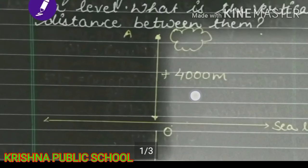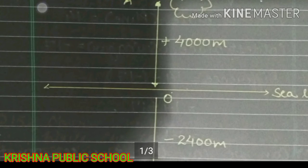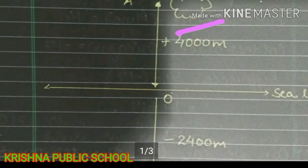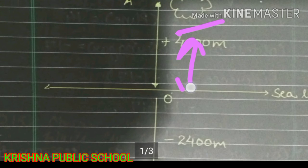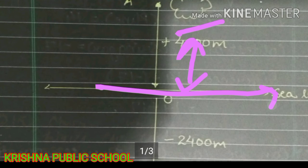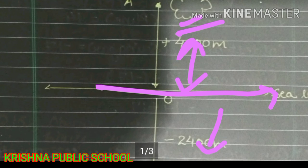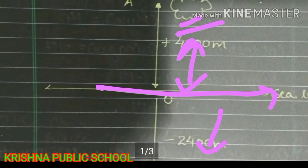We understand with the help of a diagram. My cloud is 4000 meters above the sea level. This is the sea level. And our submarine is 2400 meters below the sea level.